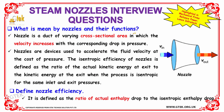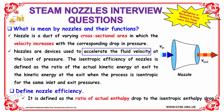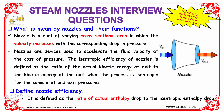What does nozzle mean and what are its functions? A nozzle is considered to be a duct of varying cross-sectional area in which the velocity increases with a corresponding drop in pressure. Nozzles are devices used to accelerate the fluid velocity at the cost of pressure. The isentropic efficiency of a nozzle is defined as the ratio of the actual kinetic energy at exit to the kinetic energy at exit when the process is isentropic, for the same inlet and exit pressure.